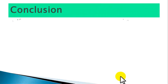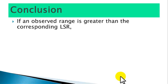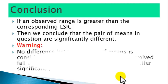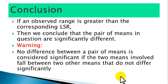Conclusion: If an observed range is greater than the corresponding least significant range, then we conclude that the pair of means in question are significantly different. Warning: No difference between a pair of means is considered significant if the two means involved fall between two other means that do not differ significantly.